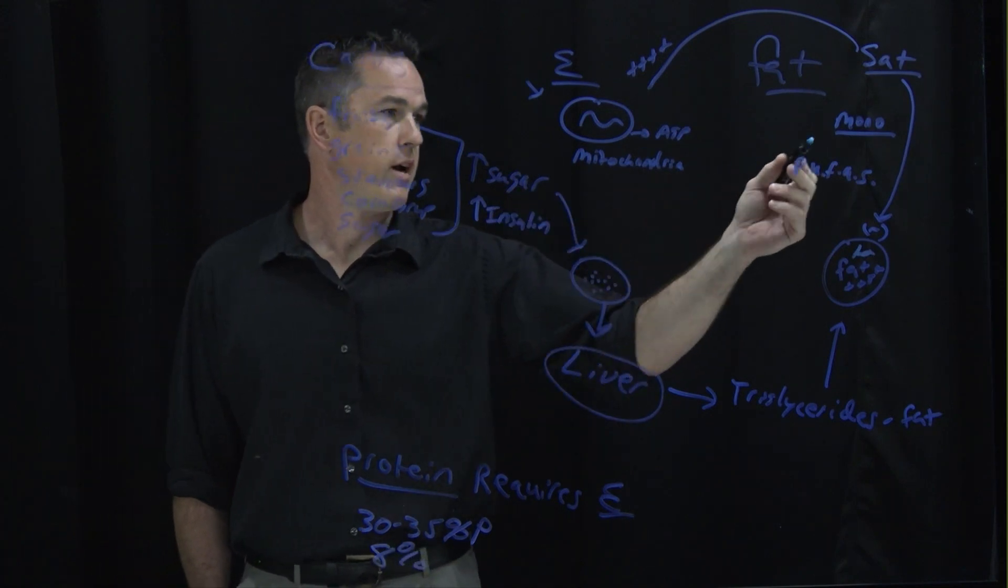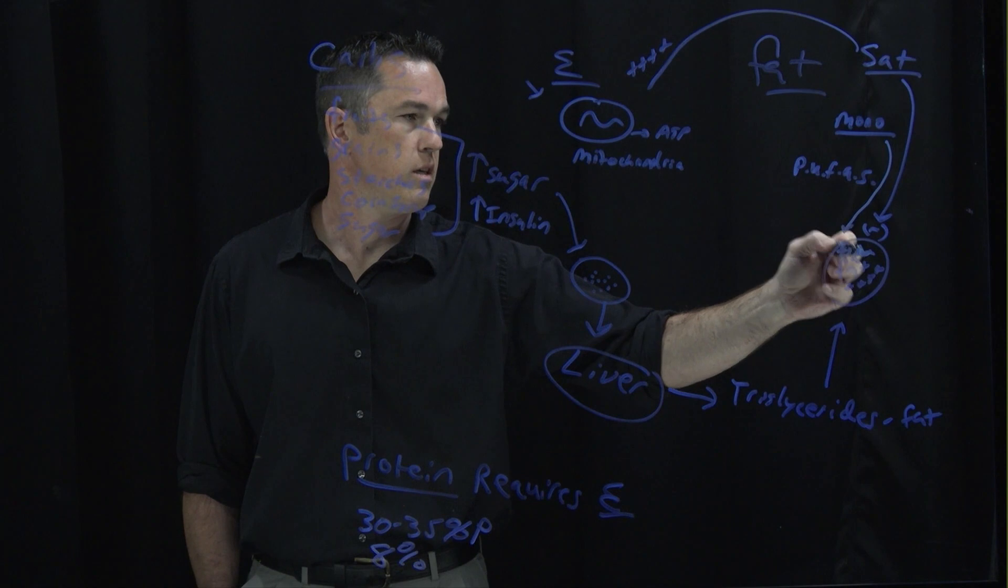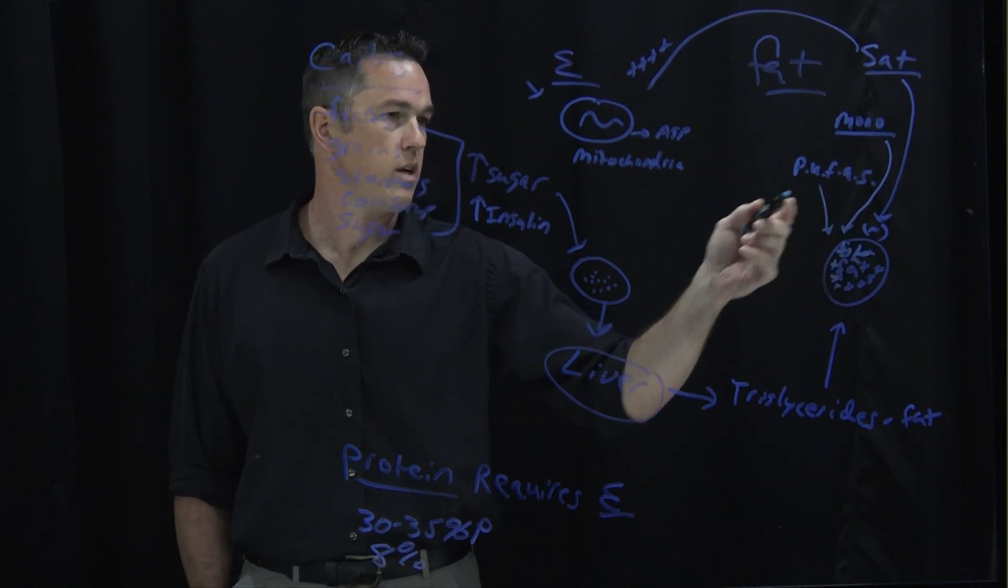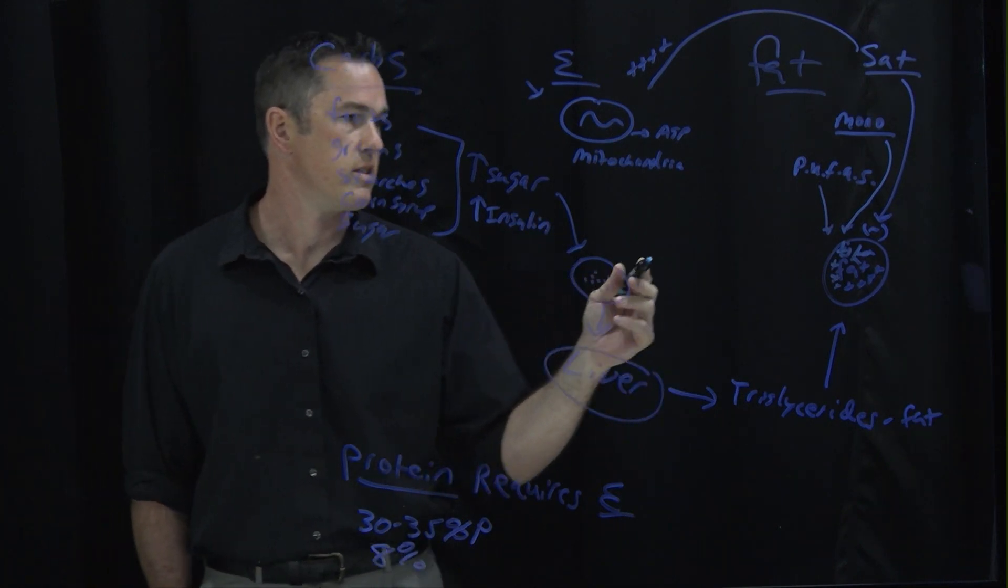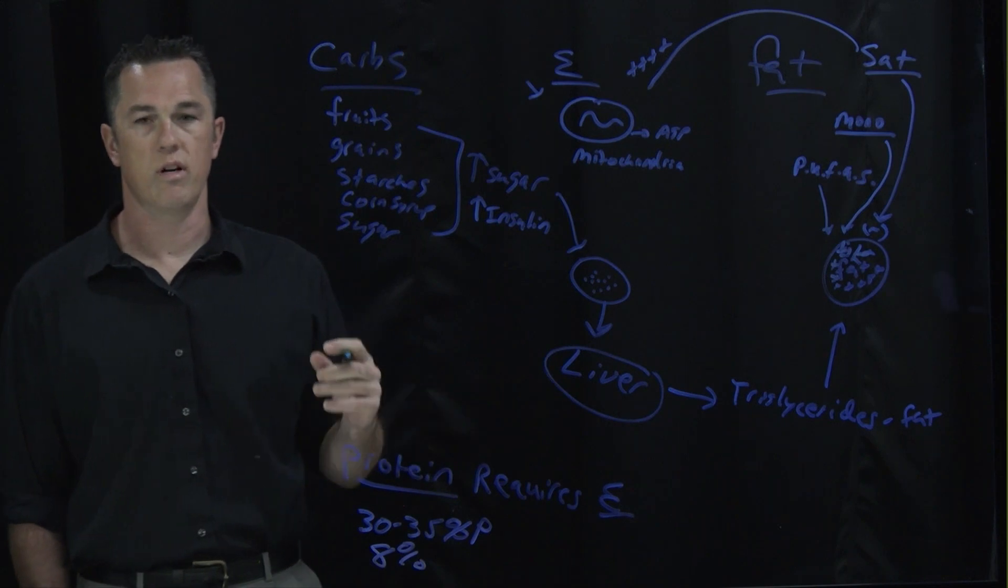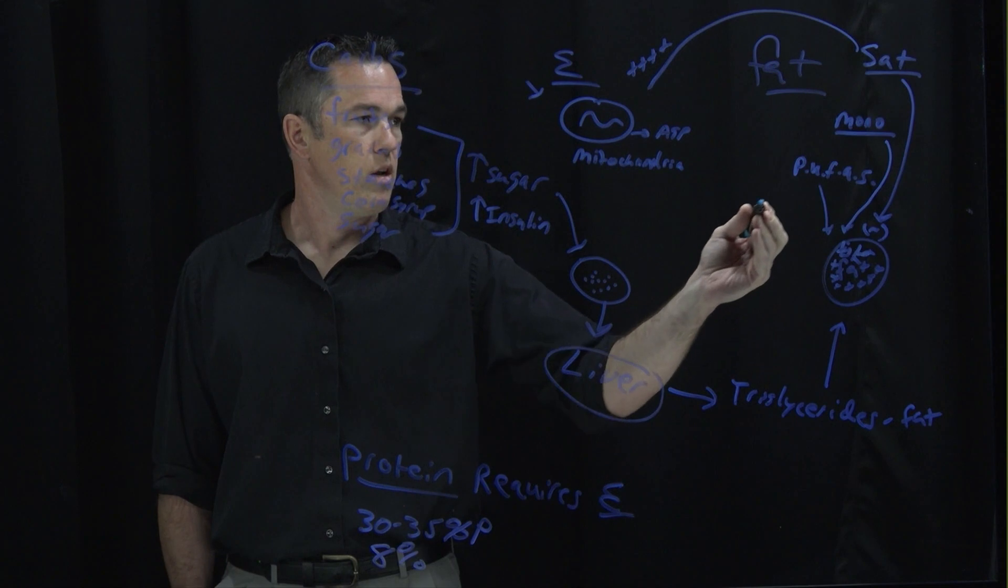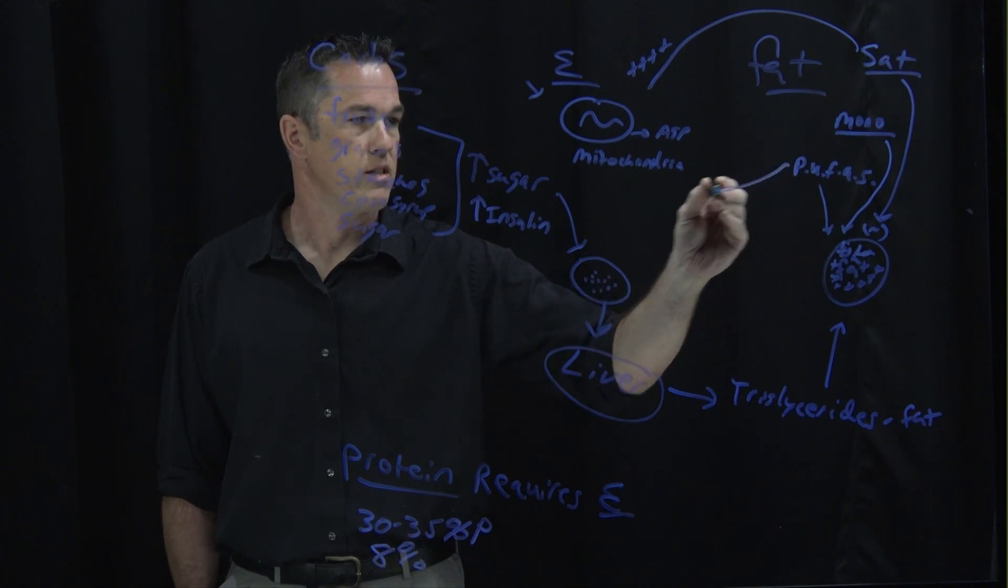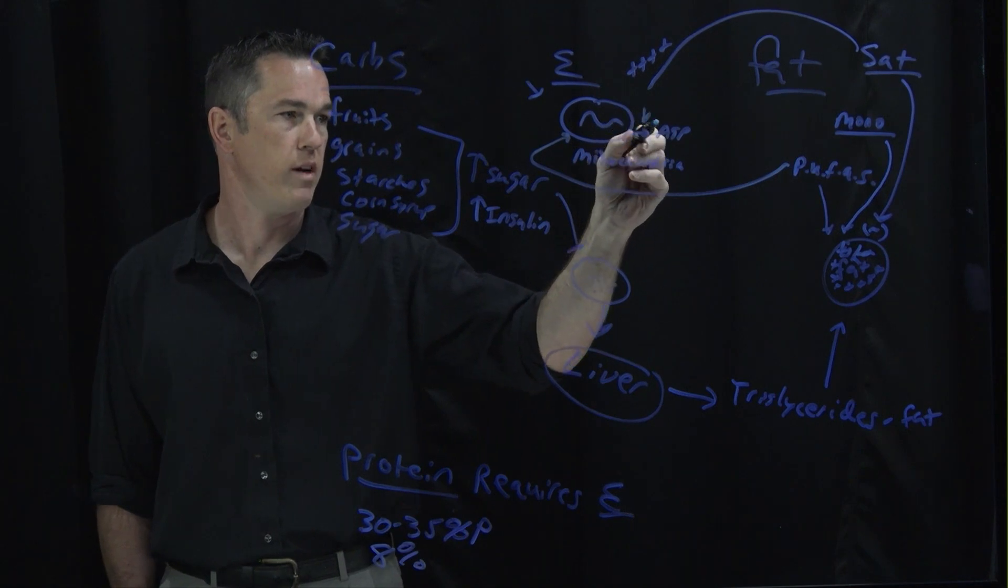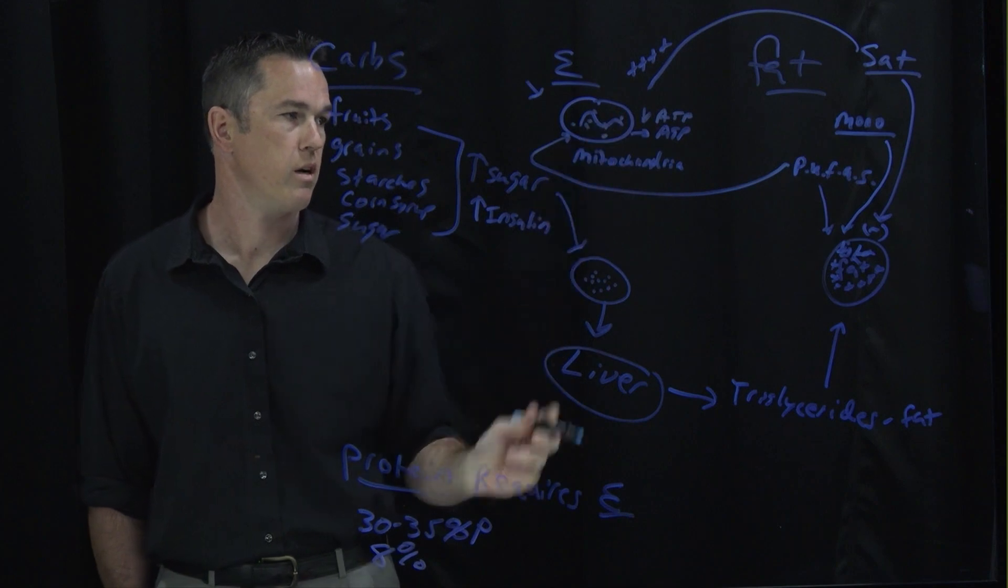The monounsaturated fat gets soaked up pretty easy and the polyunsaturated fats get soaked up really easy. One thing to understand about the polyunsaturated fats is these are unsaturated fats. And what you need to know is the more unsaturated a fat is, that means it's more unstable. And so when these unstable fats make it to your mitochondria in high quantities, it can actually slow down the production of ATP. And if it oxidizes, it can actually damage your mitochondria.